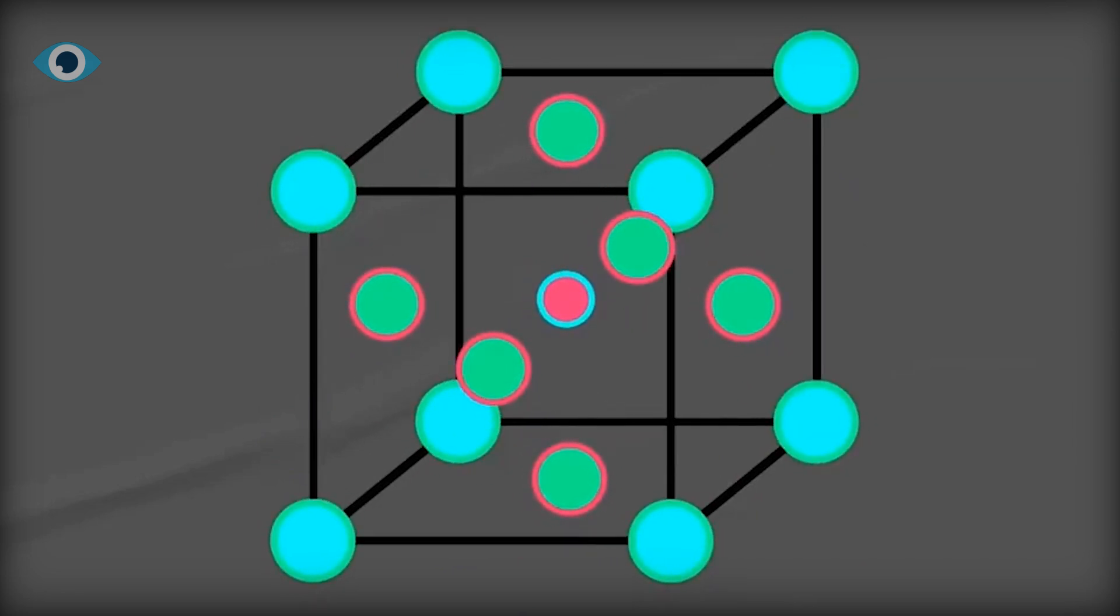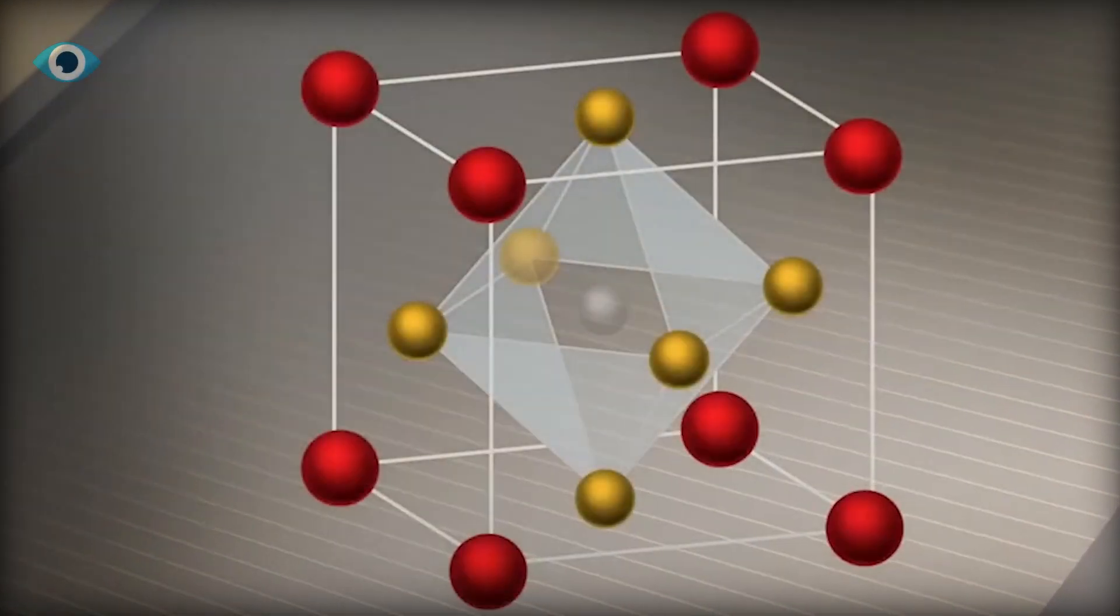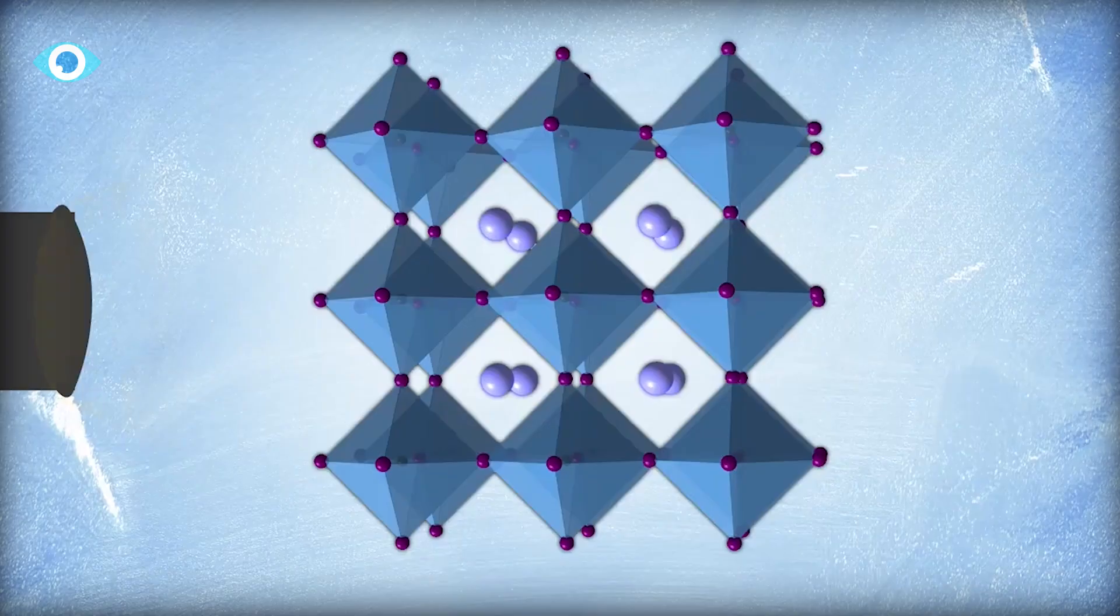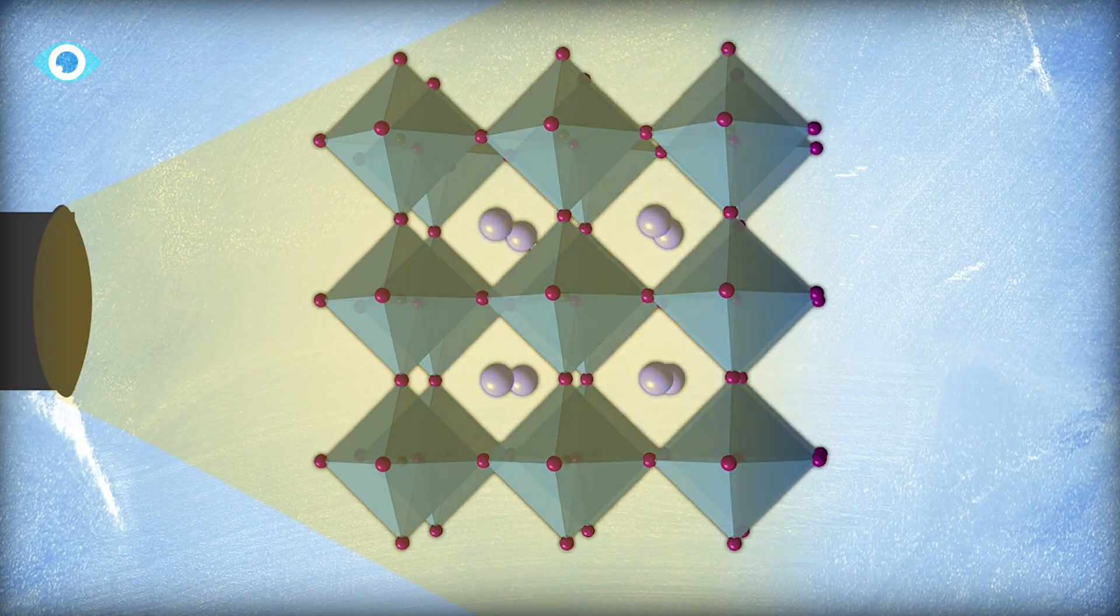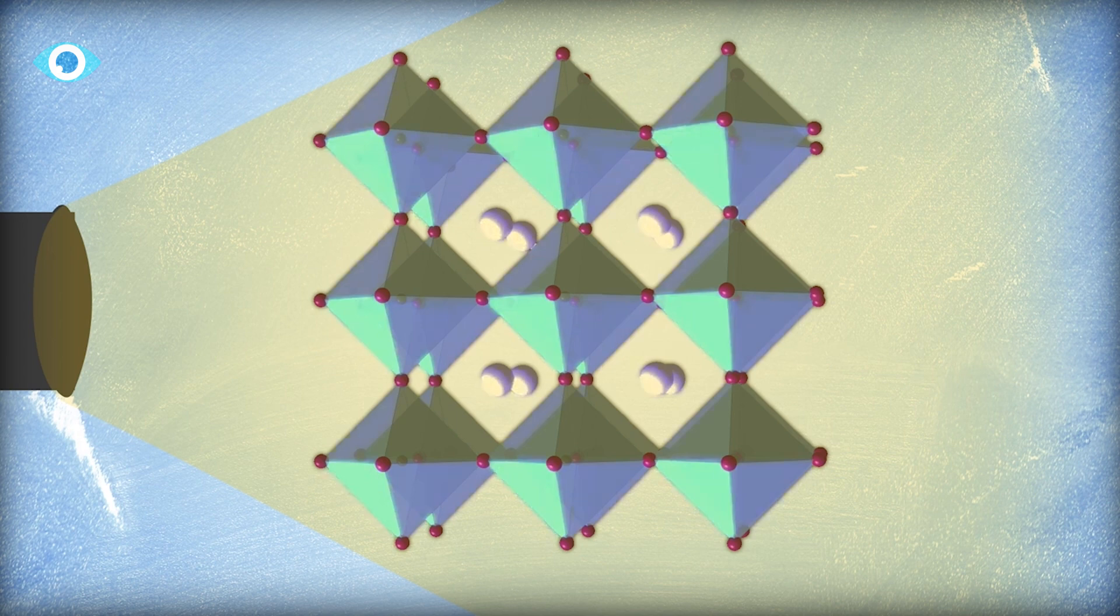In this intricate framework, methyl ammonium typically occupies the corners as the A component, while the metal acts as the central B element. Surrounding the metal are chloride or iodide ions, represented by X. This precise arrangement facilitates the efficient absorption and conversion of sunlight into usable energy. Perovskite's exceptional light-absorbing properties make it an ideal candidate for enhancing the efficiency of solar panels.